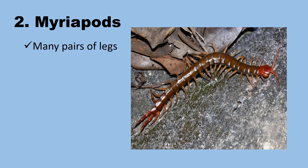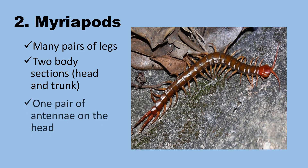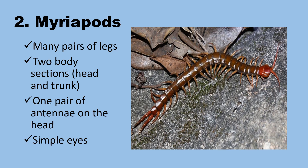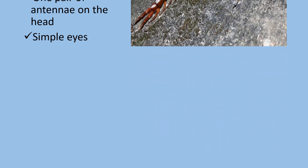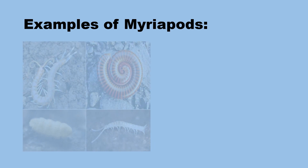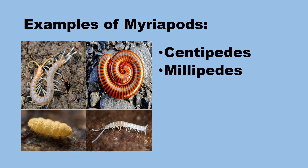Myriapods: they have many pairs of legs, two body sections — head and trunk — one pair of antennae on the head, and simple eyes. Examples of myriapods are centipedes and millipedes.